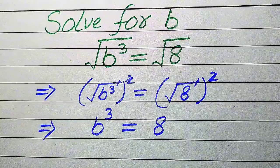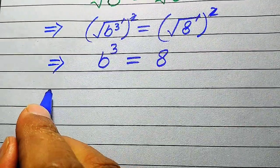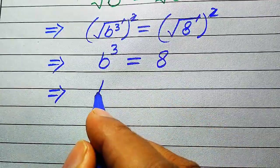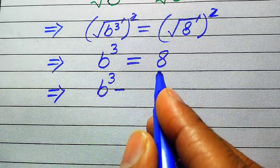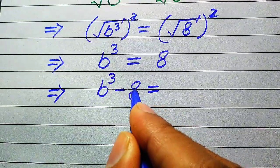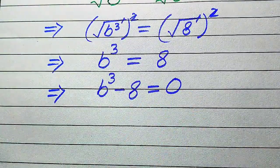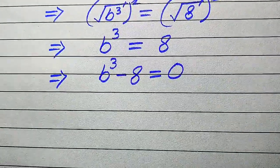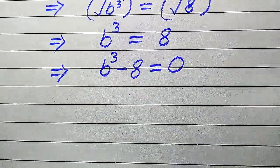We get b cubed equals to 8. Further, in the next step, we need to move this 8 from the right-hand side to the left-hand side, and it becomes b cubed minus 8, and this whole equation is equals to 0. Further, we need more simplifications.